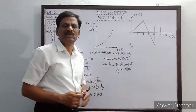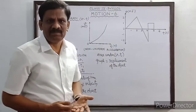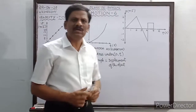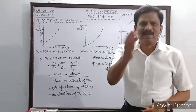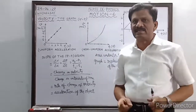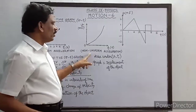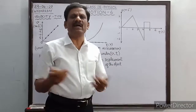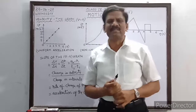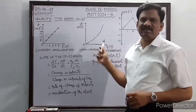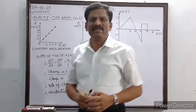In the second V-T graph, the shape is not a straight line but a curved line, so the acceleration cannot be uniform. The velocity of the body changes by unequal amounts in equal intervals of time. Therefore, from the graph, it is clearly found that the acceleration of the body is non-uniform.